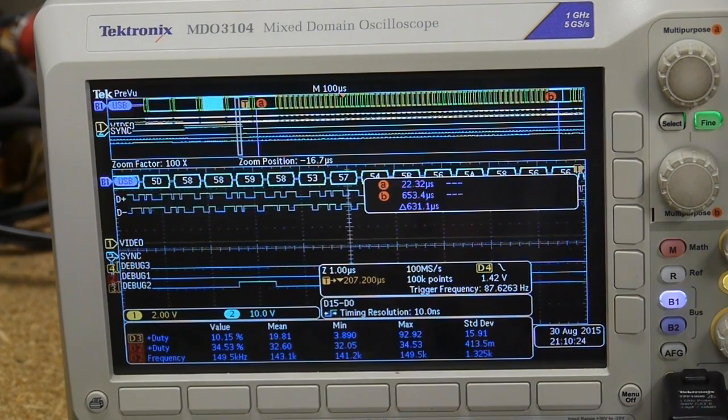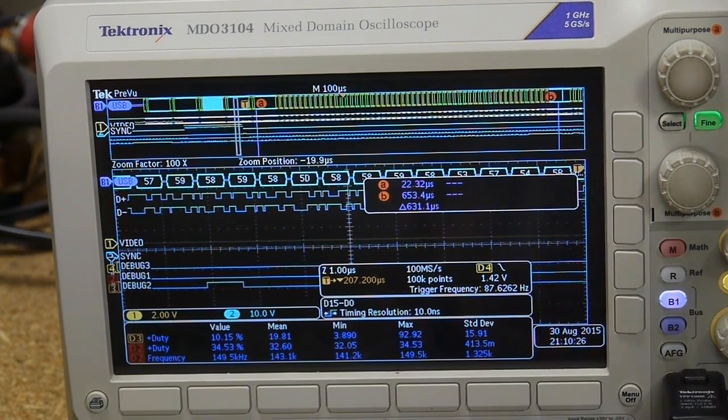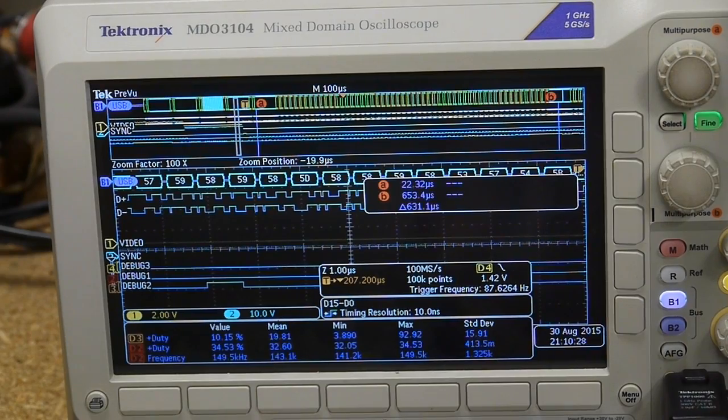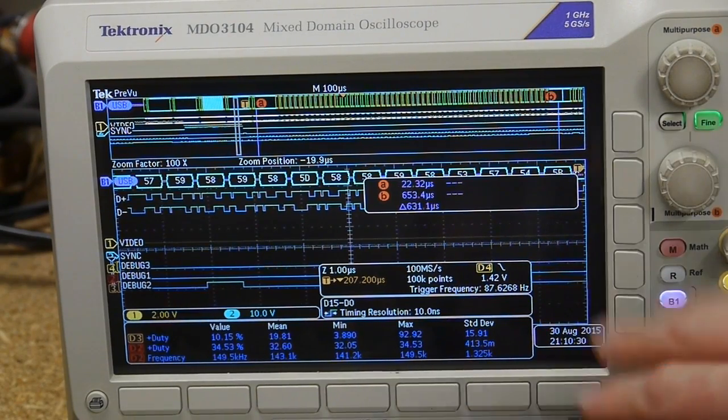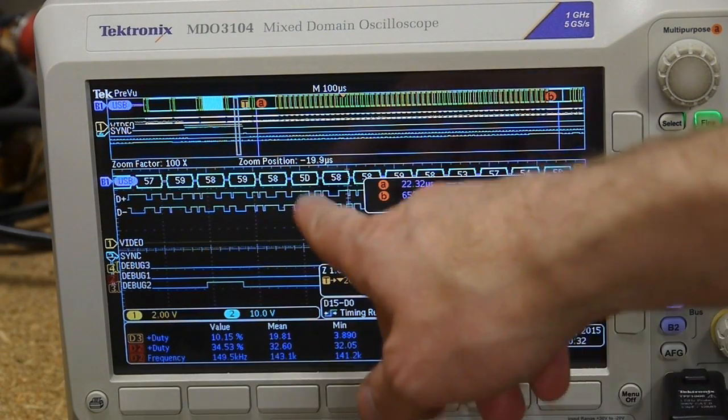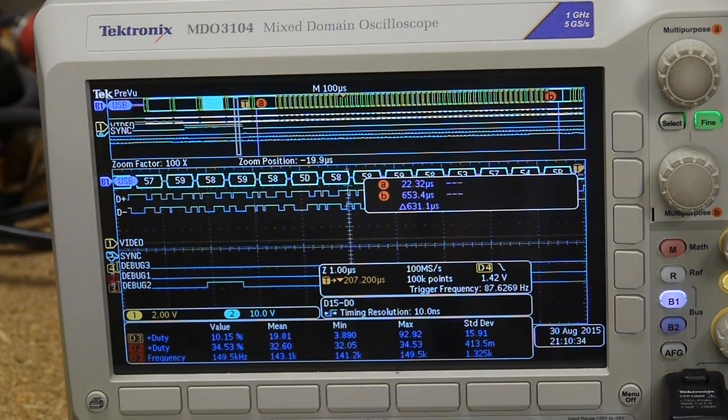If we ever see a zero in here, then we know that's the sync pulse. Of course there's only one, so it's very hard to see. The scope has the ability to be triggered off of data that's flowing through the USB—you can tell it to trigger when you see a zero in one of these—but I actually haven't got that to work.